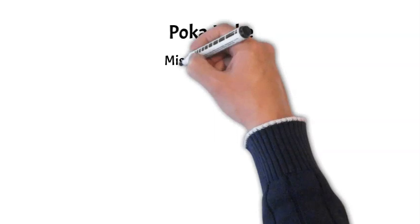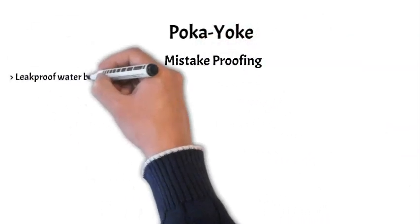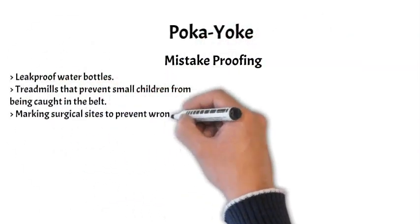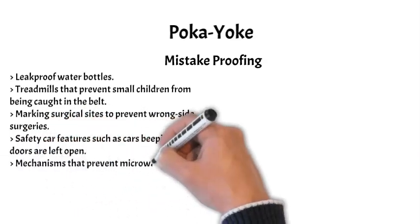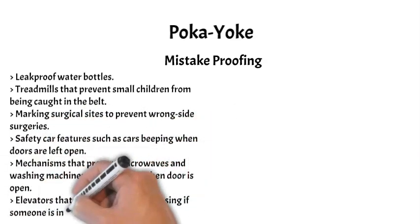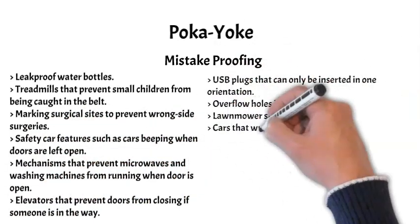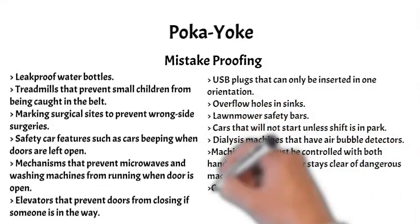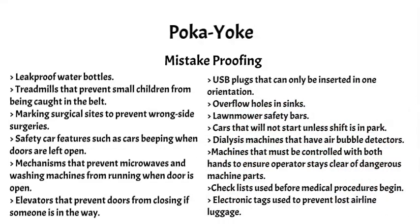The second approach is called Poka-Yoke, in which every effort is made to mistake-proof a product, service, or process. Examples include leak-proof water bottles, treadmills that prevent small children from being caught in the belt, and marking surgical sites to prevent wrong side surgeries.